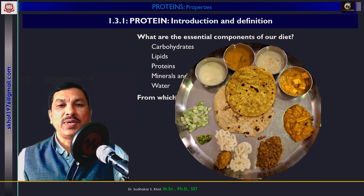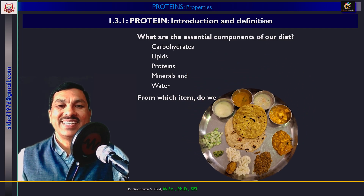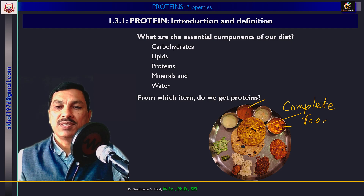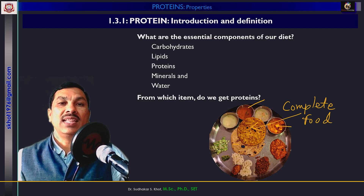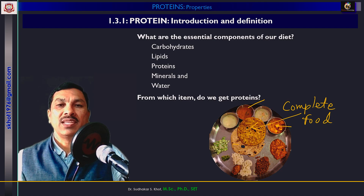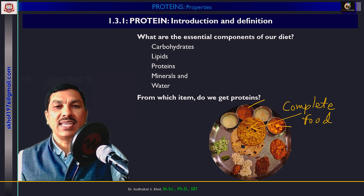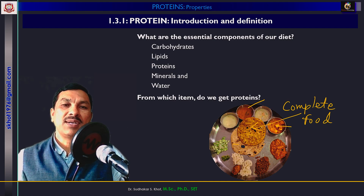Now out of these, what is the source of protein? This is a puranpoli, and puranpoli is said to be a complete food because it consists of all the biomolecules which are required for our healthy nutrition. The carbohydrates are contributed by the wheat flour, the lipids are the ghee or oil, the proteins are the besan or puran incorporated in the poli, and the minerals are given by the jaggery. So in this way, the puranpoli is the complete diet.